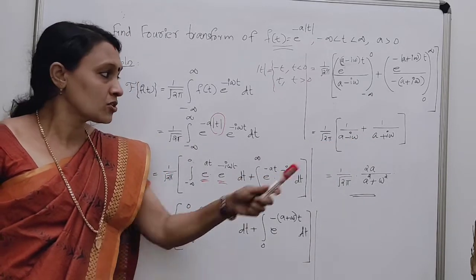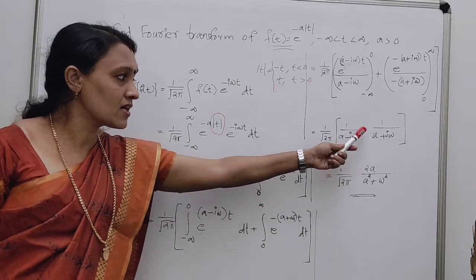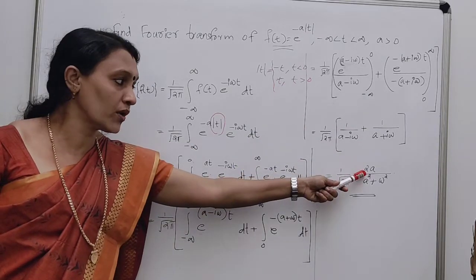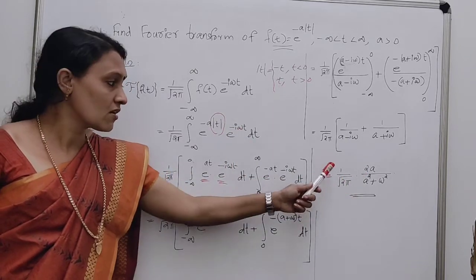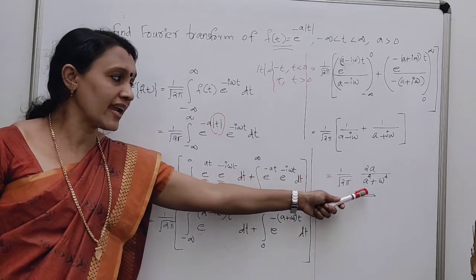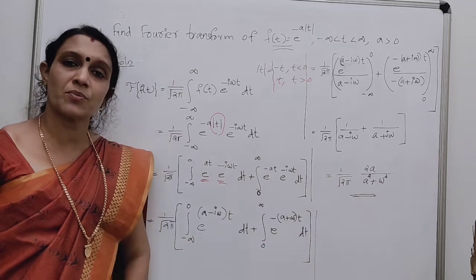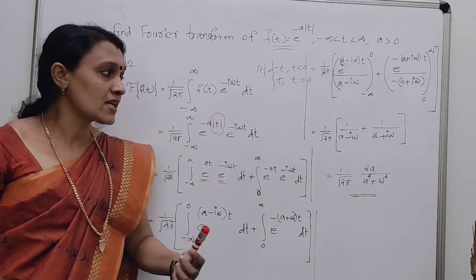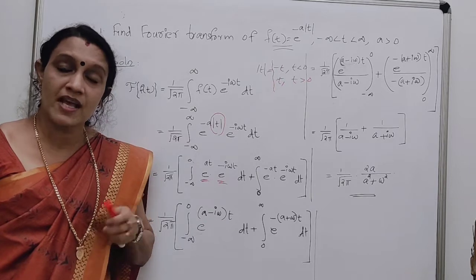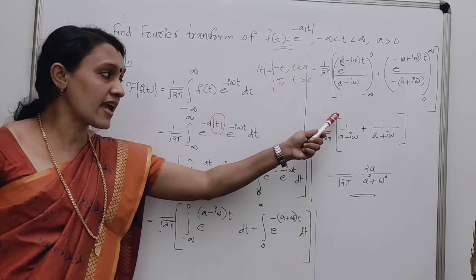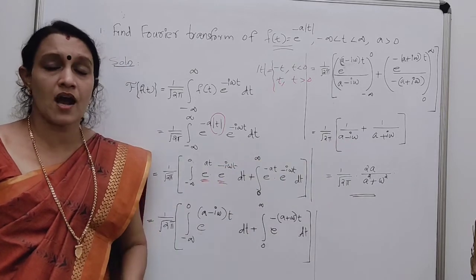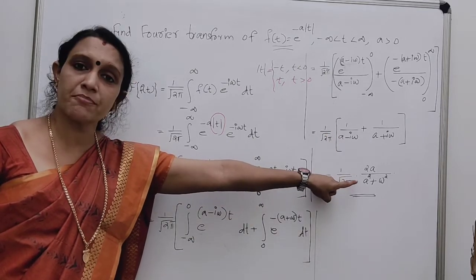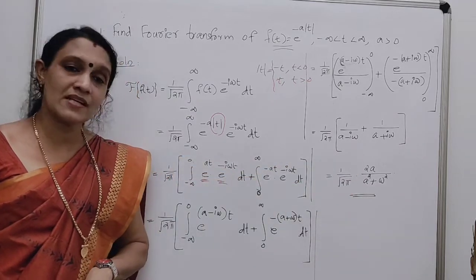Combining by cross multiplication: the numerator becomes (a+iω) + (a-iω) = 2a, since iω and -iω cancel. The denominator is (a-iω)(a+iω) = a² - (iω)² = a² - (-ω²) = a² + ω². So the combined fraction is 2a/(a²+ω²).